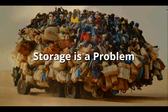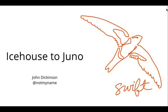My name is John Dickinson. I'm the Project Technical Lead for OpenStack object storage. You can find me online — my Twitter handle is notmyname, you can send me an email at me@not.mn, and various other places. Today I want to talk about what we've been doing since the IceHouse release, and what you can expect in Juno.